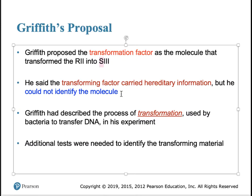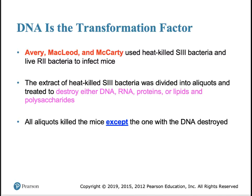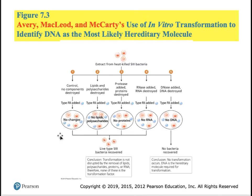Griffith did not identify what the substance was because he didn't have the technology to deduce its exact nature. It wasn't until later when three other scientists — Avery, McLeod, and McCarty — determined what the transformation factor was chemically. They took the extract from heat-killed S-type bacteria and treated it with different reagents, each designed to destroy a different component believed to be the molecule of inheritance: they digested for DNA, RNA, proteins, fats, and sugars, with proper controls.